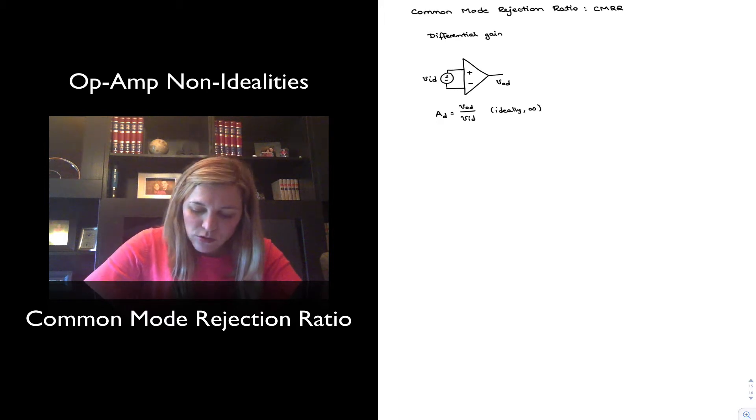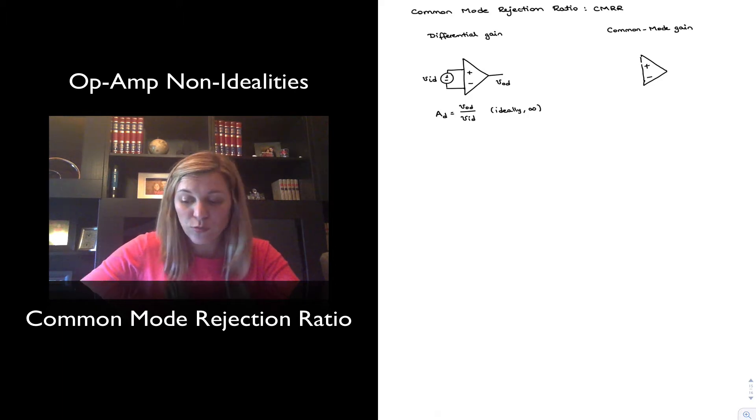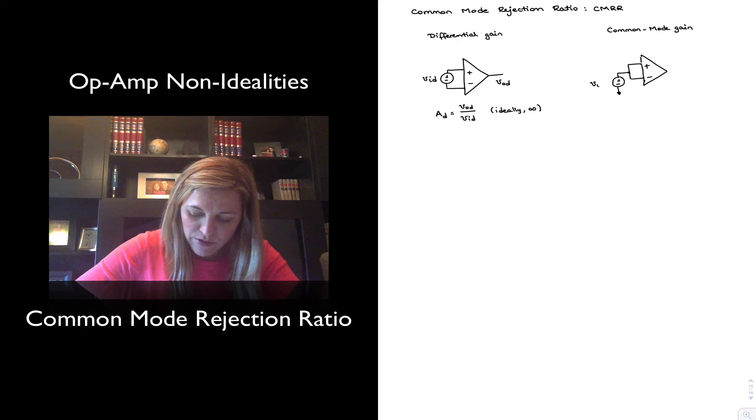There is also another type of gain that is referred to as the Common Mode gain. And similarly, if I have an amplifier and I apply a signal that is common to both inputs, so the same signal across both inputs, which I'm going to refer to as my VICM or V-Input Common Mode.